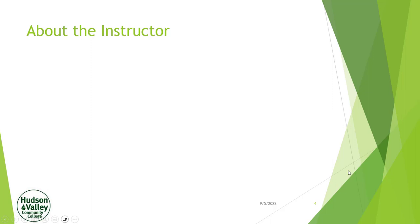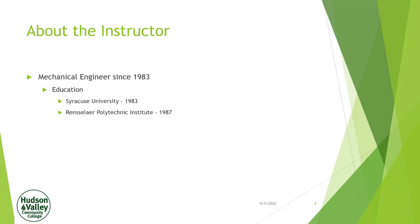A little bit about me. I've been a mechanical engineer since 1983, graduating from Syracuse University and later from Rensselaer Polytechnic Institute — so I've got two different schools under my belt for this whole engineering thing. As an engineer and engineering student, I've done a fair amount of stuff. All the places I worked at, I learned a lot, and each job better prepared me for the next one.